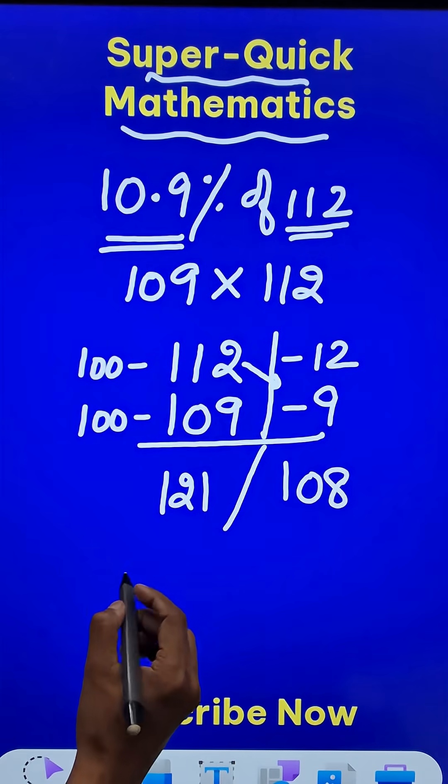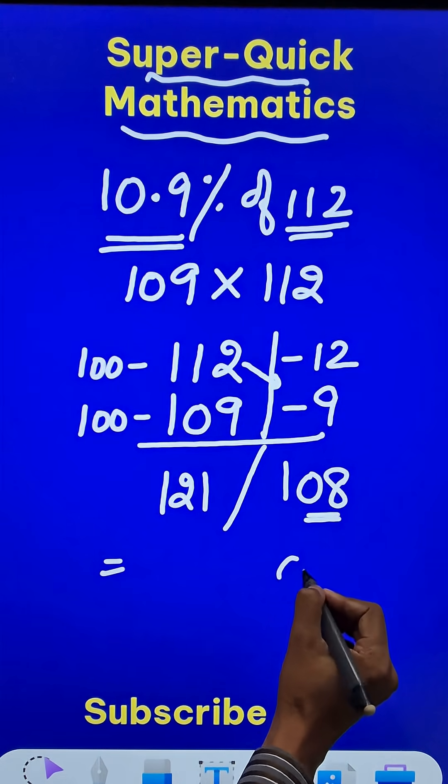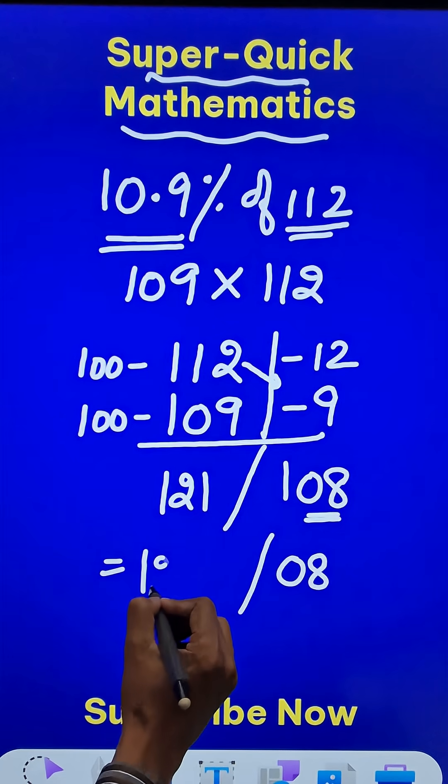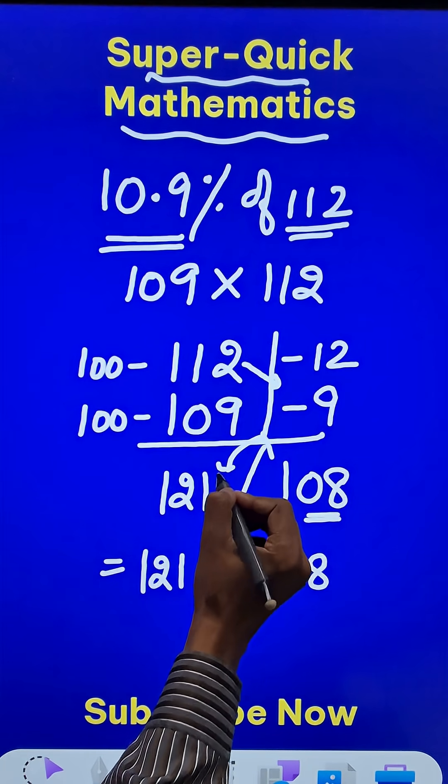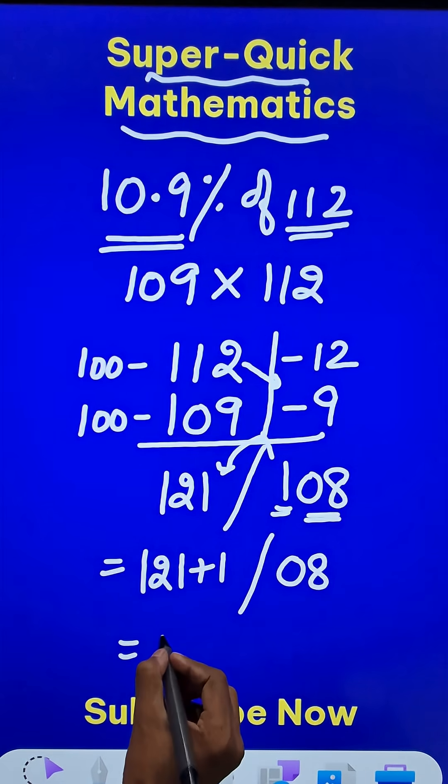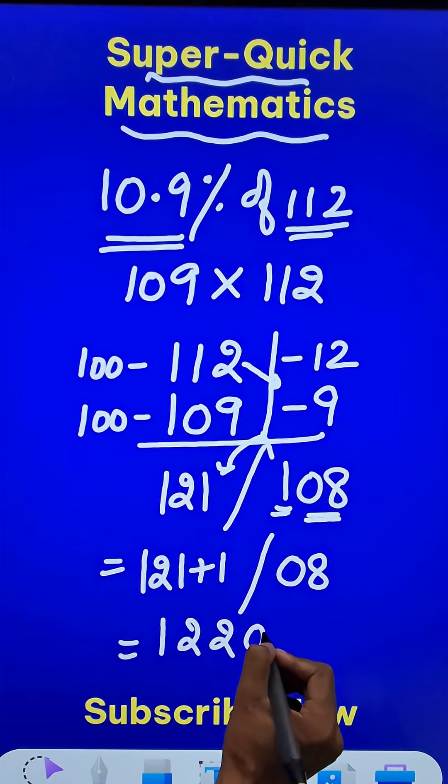Now, how does this help us? These last two digits have to be retained here and 121, this digit 1 will get carried forward and the final answer will be 12208.